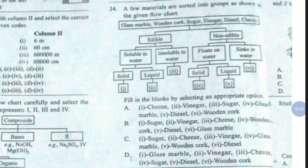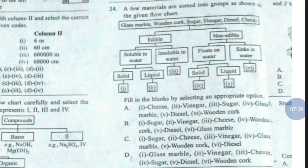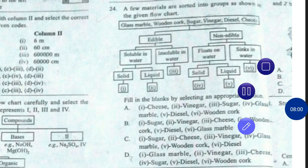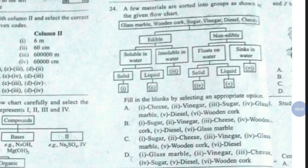Question number 24. A few materials are sorted into groups as shown in the given flow chart. Fill in the blanks by selecting an appropriate option. The correct answer is option number B.